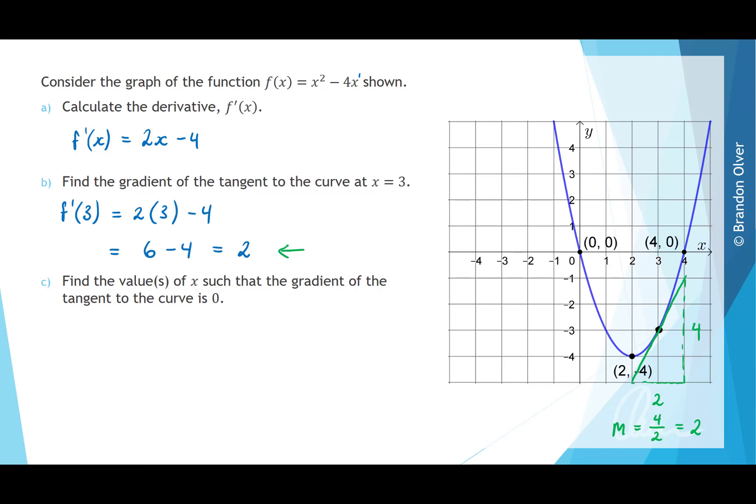For part c we want to find the value of x such that the gradient of the tangent to the curve is 0. So what we want to do here is we want to set f'(x) equal to 0 and solve for x. So f'(x) has the expression 2x - 4 and we want that to equal 0.